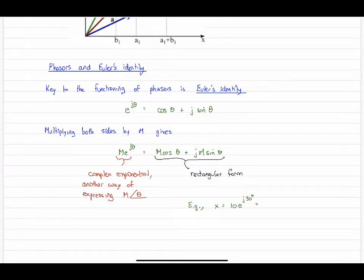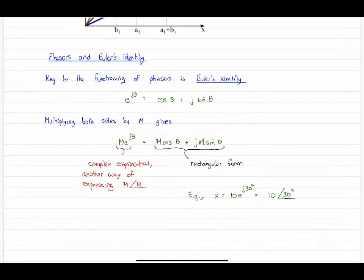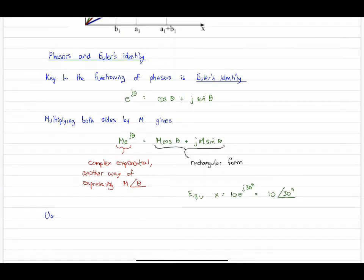For example, if we take a number, say 10 e to the j30°, this is a vector basically of length 10, angle 30° from the positive real axis.